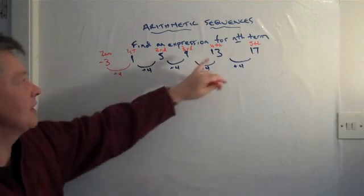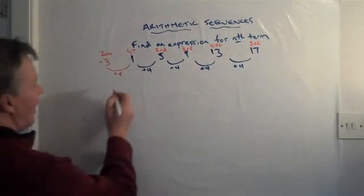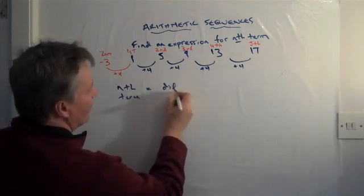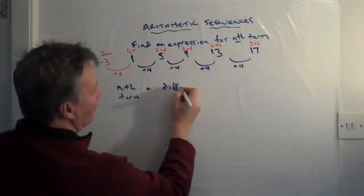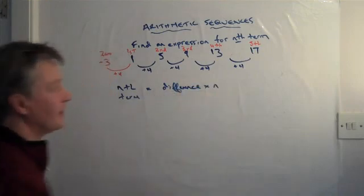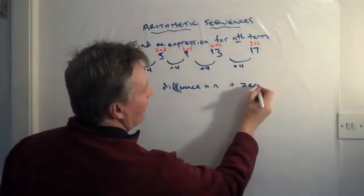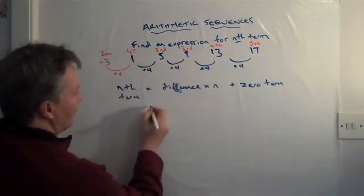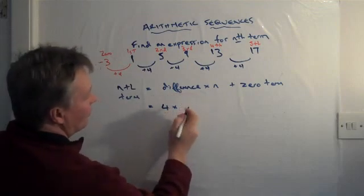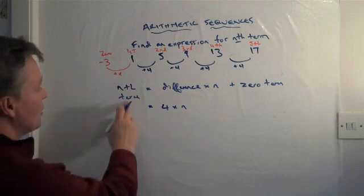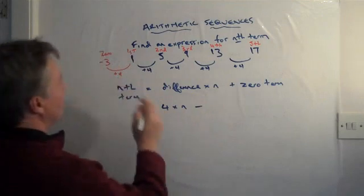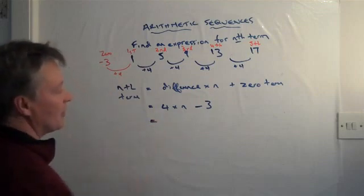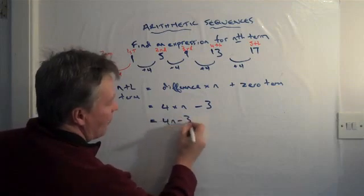In order to write the expression in terms of n, we're looking at: the nth term equals the difference, which is 4, multiplied by n, plus the zero term. So we can write out our expression: the difference is 4, multiplied by n — we don't know what n is going to be — minus 3, which is the zero term. So we've got an expression which is 4n minus 3.